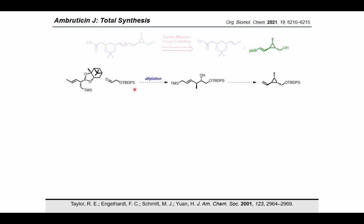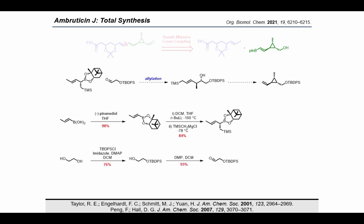The allyl chiral boronate was synthesized from pinane diol-derived boronic ester by a Matteson homologation followed by in situ trapping with a Grignard reagent. The corresponding aldehyde was readily accessed from ethylene glycol. Pleasingly, the planned allylation proceeded smoothly, providing the desired homoallylic alcohol in excellent yield as a single diastereoisomer.